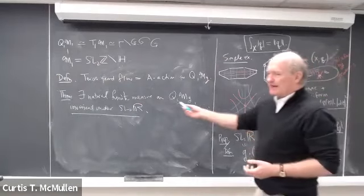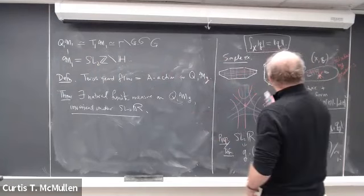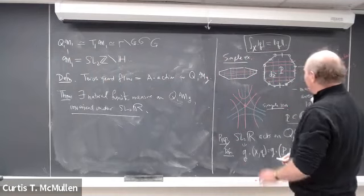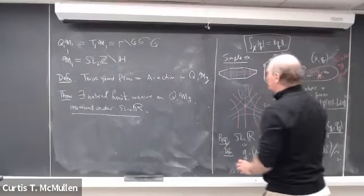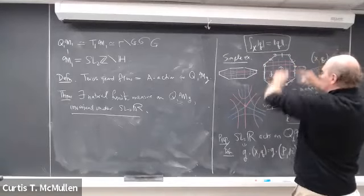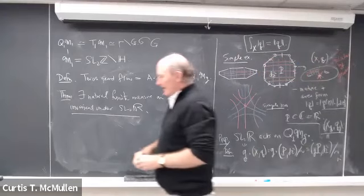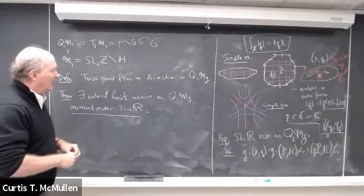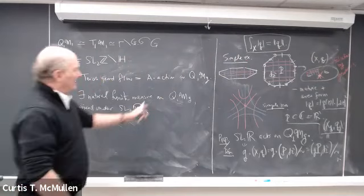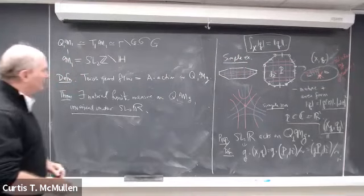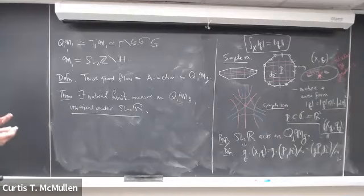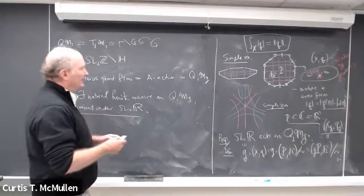This measure can be described fairly simply: one way to change location in the moduli space of quadratic differentials is to change the edge lengths of the polygon and rotate them slightly. Those linear coordinates provide a local homeomorphism to Euclidean space, and the pullback of the Euclidean volume form turns out to be natural and invariant under the action of SL(2,R).